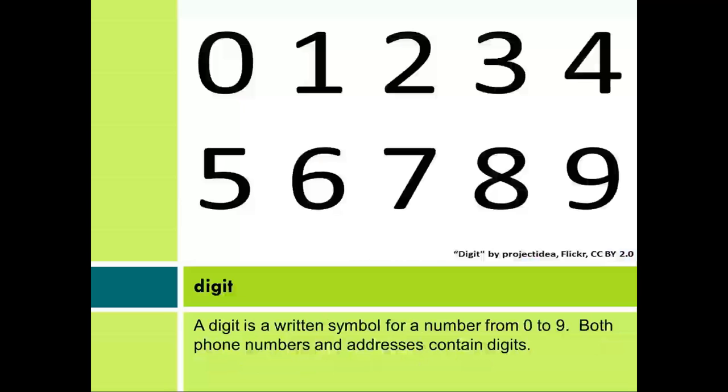Digit. A digit is a written symbol for a number from 0 to 9. Both phone numbers and addresses contain digits.